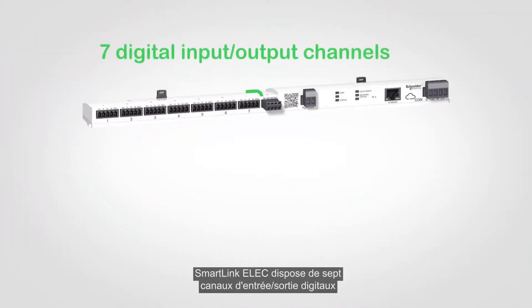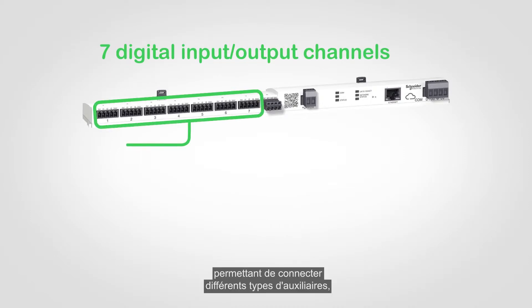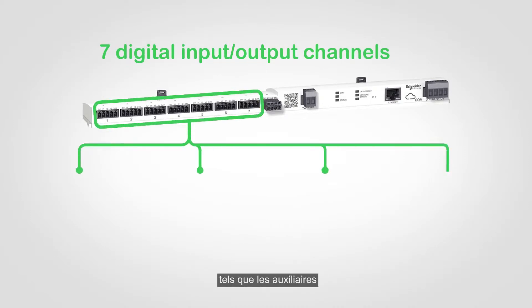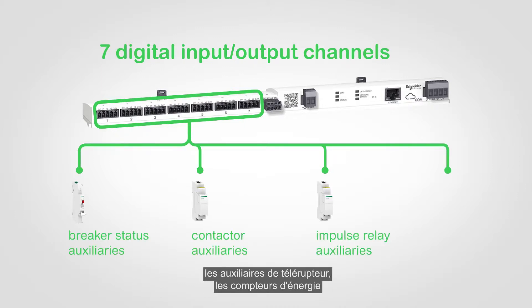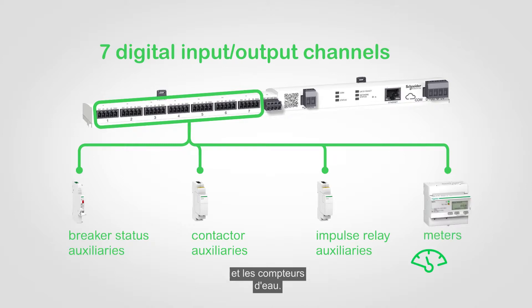SmartLink Elec has seven digital input-output channels to connect different types of auxiliaries, such as breaker status auxiliary, control and indication auxiliary for contactor, control and indication auxiliary for impulse relay, as well as energy and water meters.